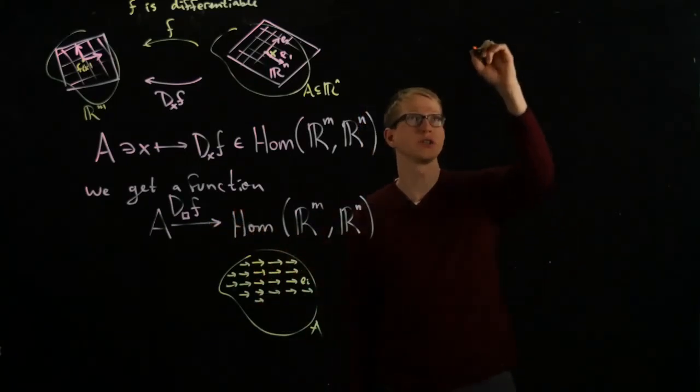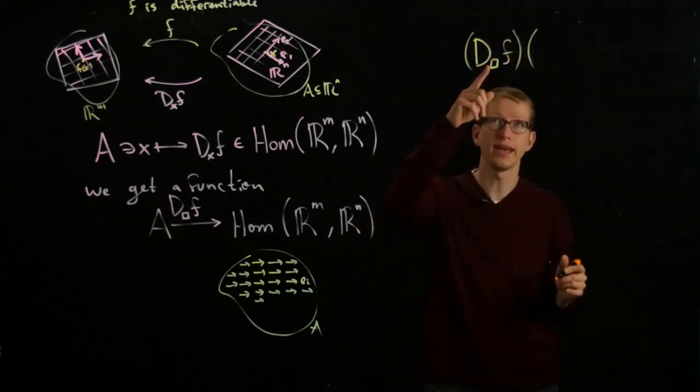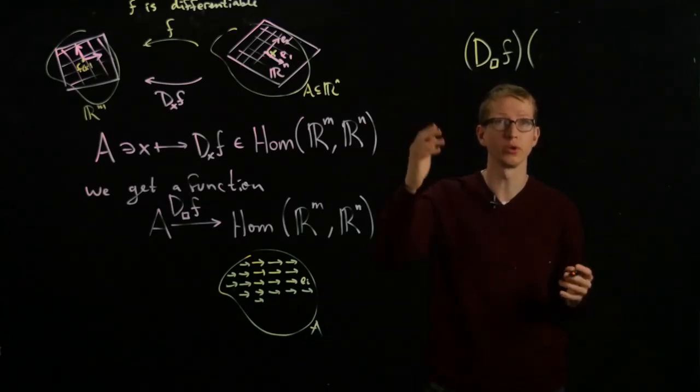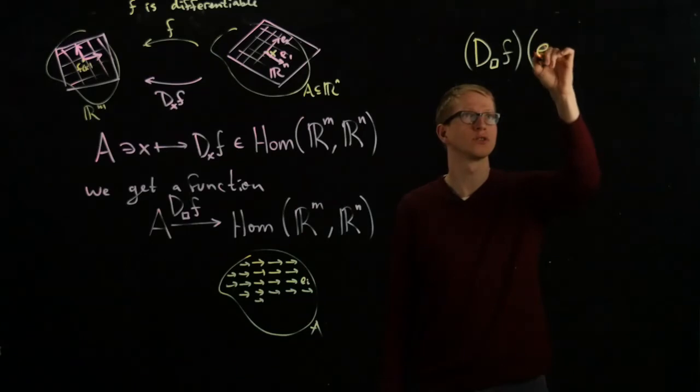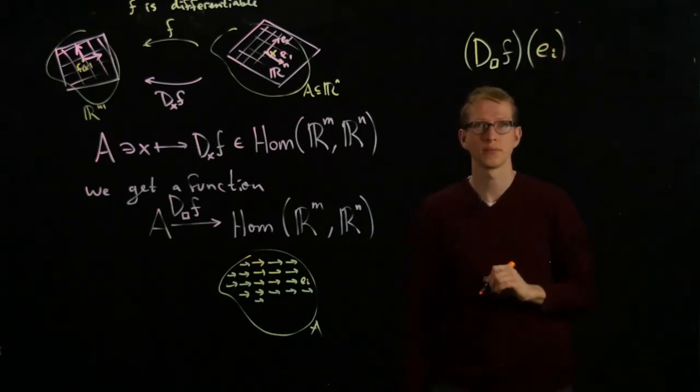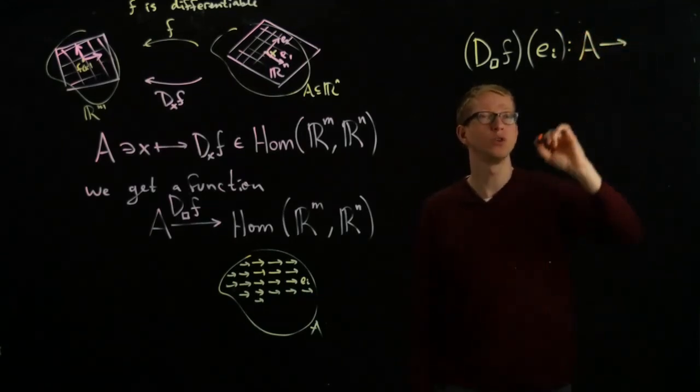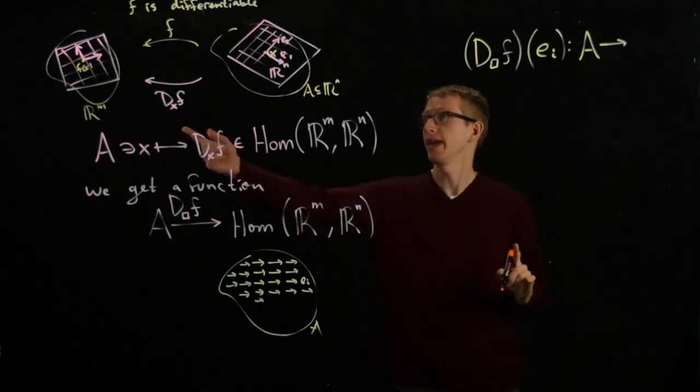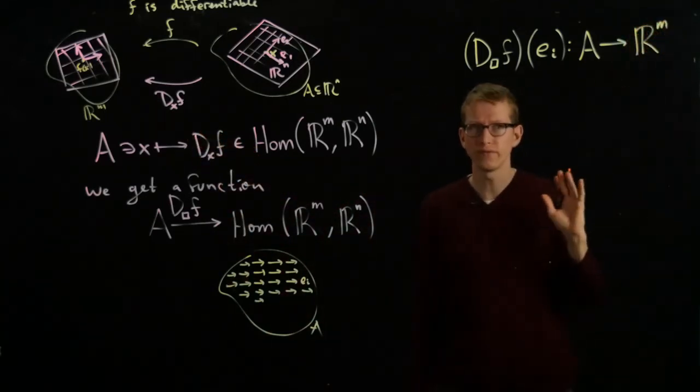We can look at this function, and instead of plugging in x right away, so we're going to think of x as being a variable, we'll plug in the unit vector ei everywhere. So, we'll write ei here. Now, what exactly do I mean by this? This is a function from A to, what should it be a function from? From A to R^m.